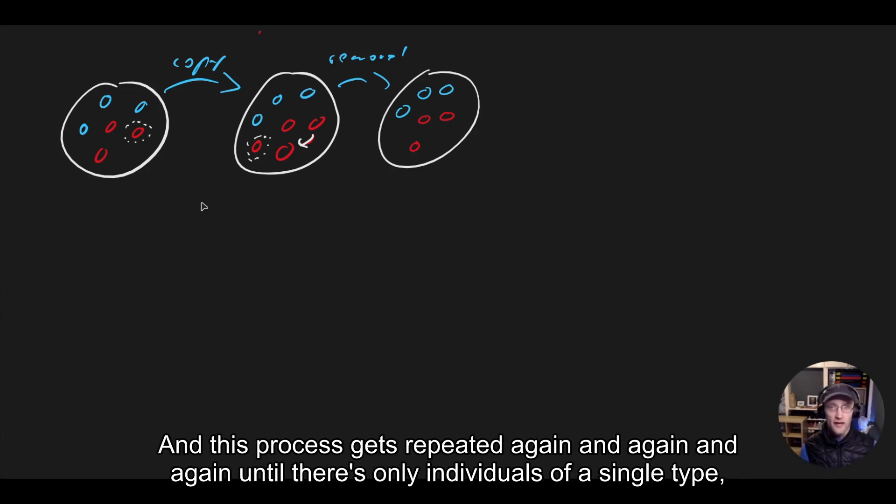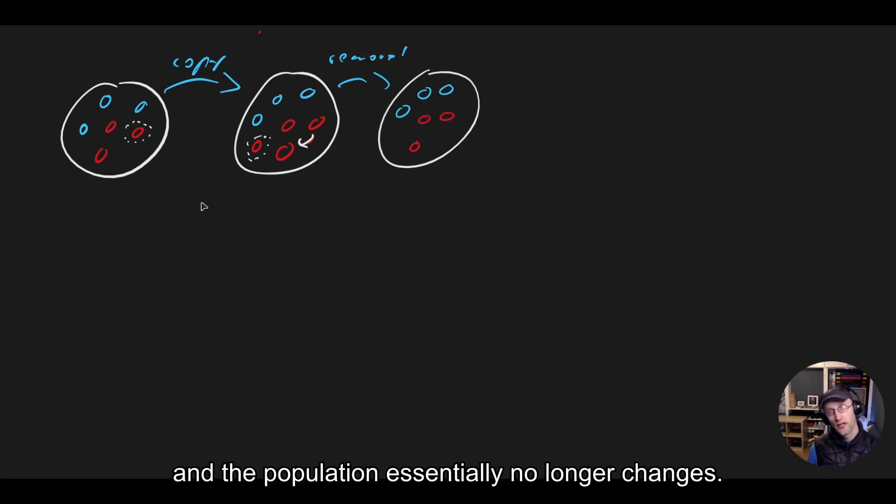And this process gets repeated again and again until there's only individuals of a single type, at which point the population essentially no longer changes. So I'm going to just put a little X there to note that we've gotten rid of the individual that was there.